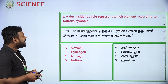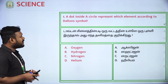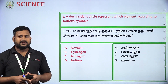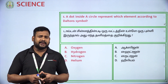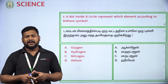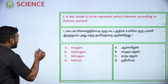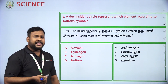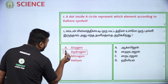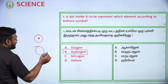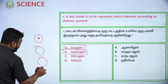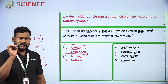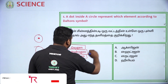Next question: A dot inside a circle represents which element according to Dalton's symbol? Options include oxygen, hydrogen, helium. A dot inside a circle — if you put a dot inside a round shape, that is nitrogen. A plain circle is hydrogen. So the answer is option B — hydrogen.